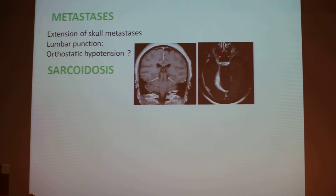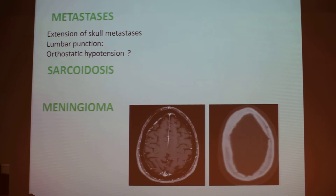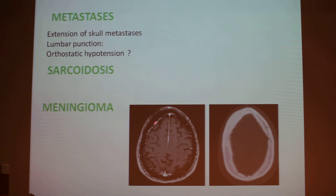Sarcoidosis can provide very thick thickening and enhancement of the dura. Also meningioma, which can be very tricky because the meningioma can be only bone — you see bone thickening with soft spikes and a little thickening of the meninges that cannot be seen on CT scan and has to be searched for on MRI.